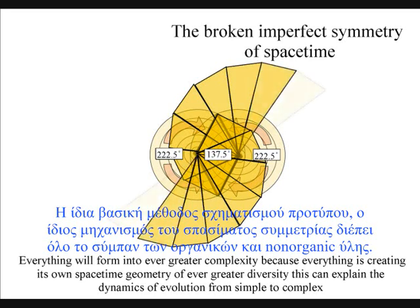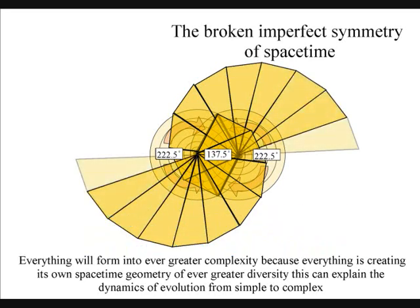This explains why nature never produces straight lines, but an endless array of curves and spirals.